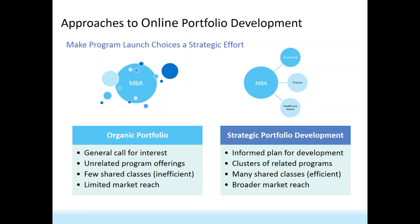Our insights come from 20 years of experience in the online program management community. We represent over 40 institutional partners and support over 250 individual online programs in the market today. Our data also comes from iPads and classic market research tools like the Bureau of Labor and Statistics, as well as general observations of trends in the market. We've noticed that there are typically two main paths towards putting together an online portfolio: organic portfolio development, where a general call for interest on campus leads to programs that are 'ready to go online' going first — which results in unrelated programs, very few shared courses, general inefficiency, and limited market reach.